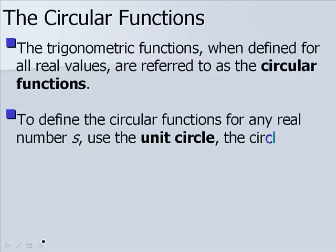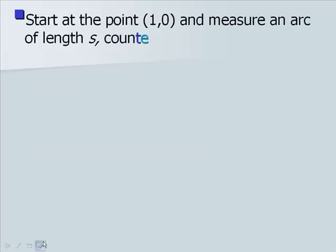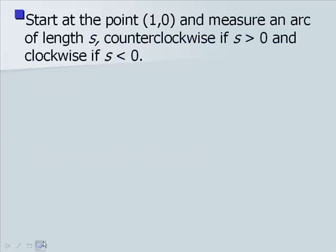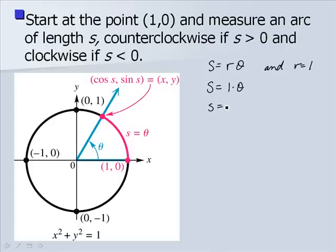To define the circular functions for any real number s, we use the unit circle — the circle with center at the origin and radius of one unit. We start at the point and measure an arc of length s counterclockwise if s is greater than 0, and clockwise if s is less than 0. We saw in Section 8.1 that radian measure of theta is related to arc length s by s equals r times theta. In our unit circle, r equals 1, so s is simply equal to theta.